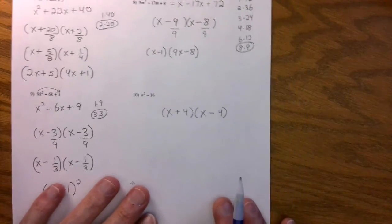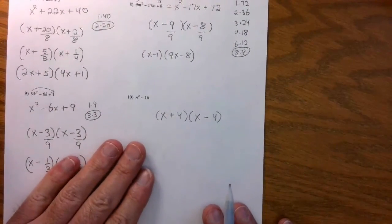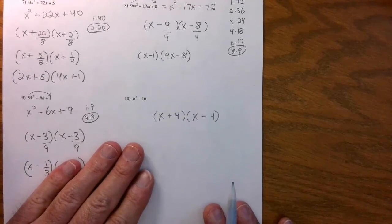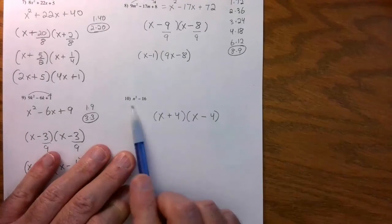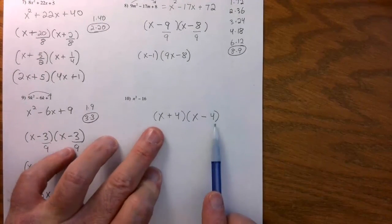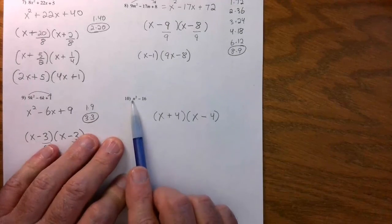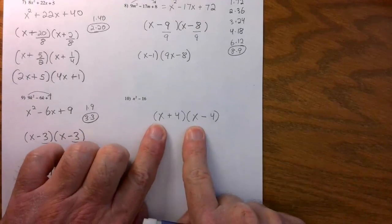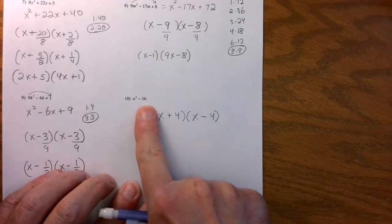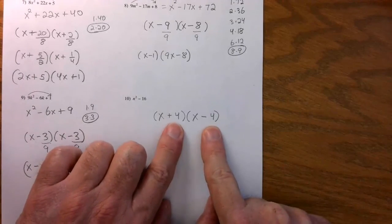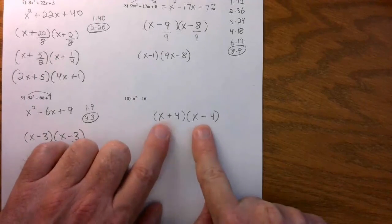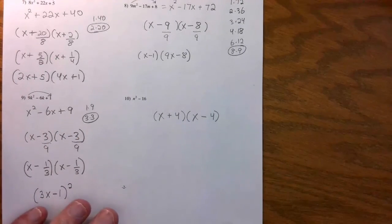And number ten is, I think, the easiest one of all. It's the difference between two squares. Just make your brackets. What's the square root of the first one? Put it here. What's the square root of sixteen? It's four, of course. Put it here. And then one's a plus and one's a minus. And you're done.